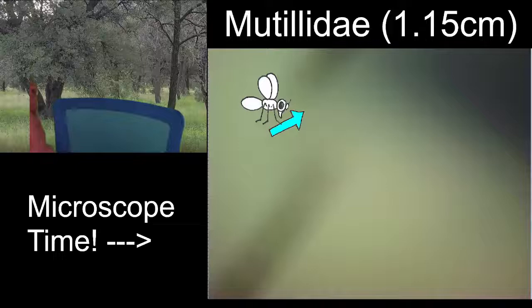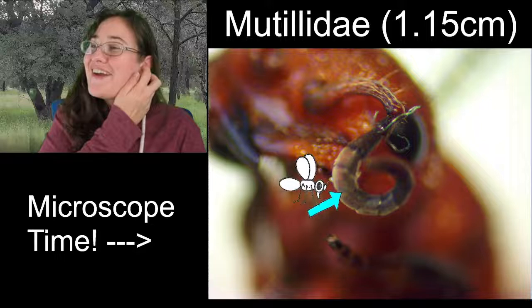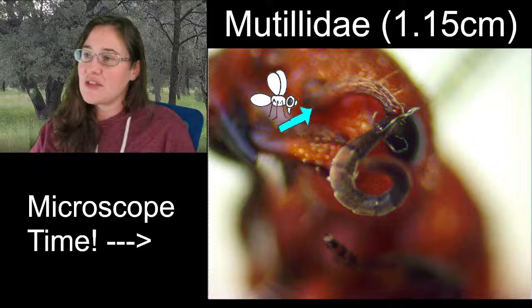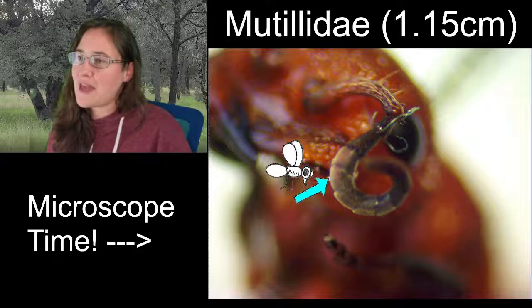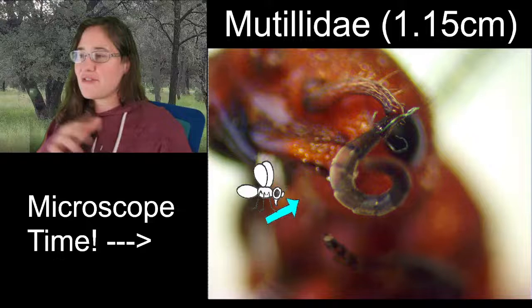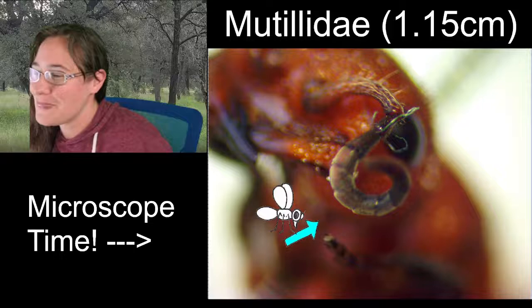It looks kind of like a scythe, but if we turn the specimen sideways, it's less of a scythe and more of a curly-cue. These velvet ants have elbowed antennae — they have that first section, the scape, that is really really long, then a very short pedicel, and then the flagellum. The idea is when they hold it, it's shaped like elbows.